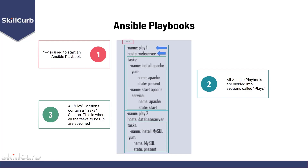In YAML files, sections are defined by specifying the name followed by a colon, with everything underneath indented to indicate it's part of that section. It's also possible to create subsections inside YAML files. For example, inside play1, the task section contains two key-value pairs and two subsections. The first key-value pair specifies the name of the task — in this case, 'Install Apache'. Then we have a subsection called 'yum', which refers to the yum package manager in CentOS, used to install applications directly from the terminal.